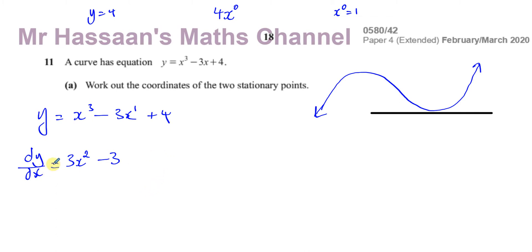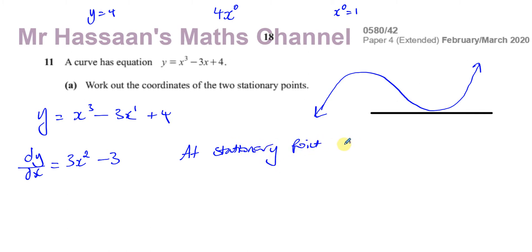So dy/dx equals 3x squared minus 3. This expression tells us the gradient of the curve at any point. For example, when x equals 3, the gradient is 3 times 9 minus 3, which is 24. But we want to do the opposite — we want to find what the value of x is at the stationary point. At the stationary point, the gradient is zero, so dy/dx must equal zero.